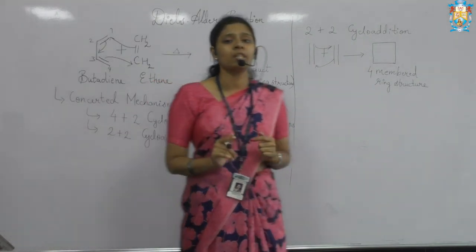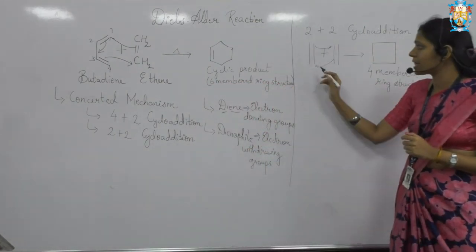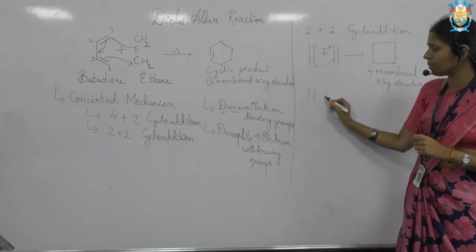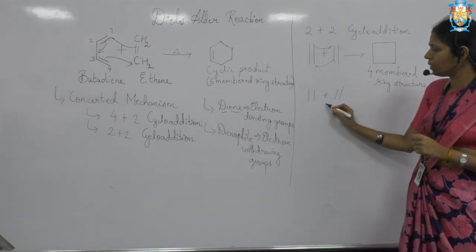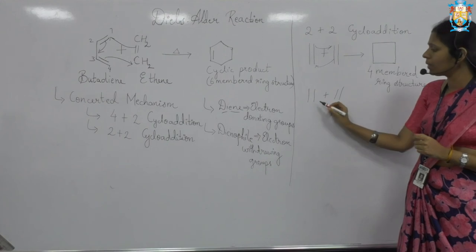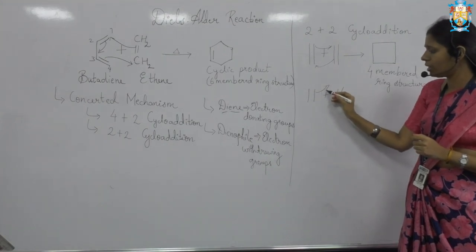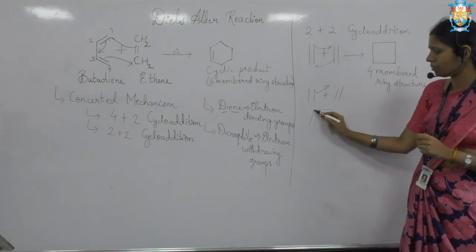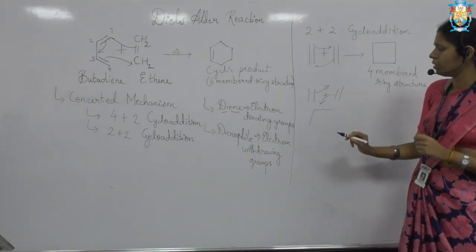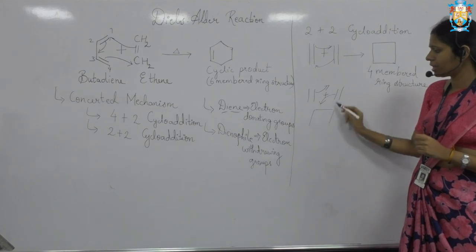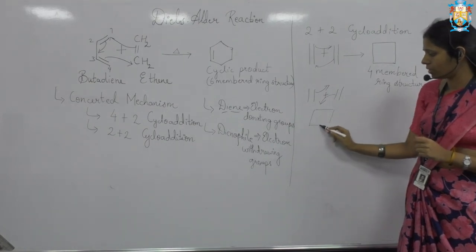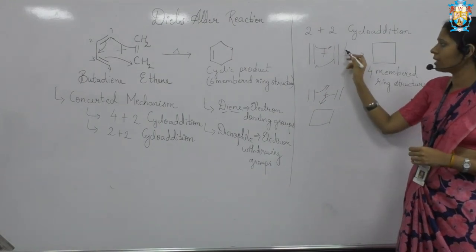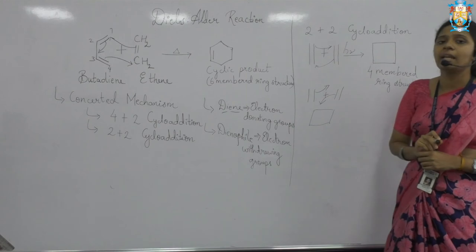The two-plus-two cycloaddition — you can see it is something like an ethene molecule. It will react to give cyclobutene. This bond moves here, this bond comes here, and it is covered, so you get a cyclobutene molecule. Now this reaction happens in the presence of sunlight, that is hν — it belongs to the photochemical reaction, wherein in the presence of sunlight you get this two-plus-two cycloaddition.